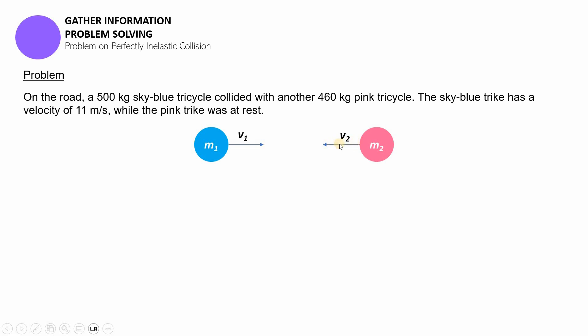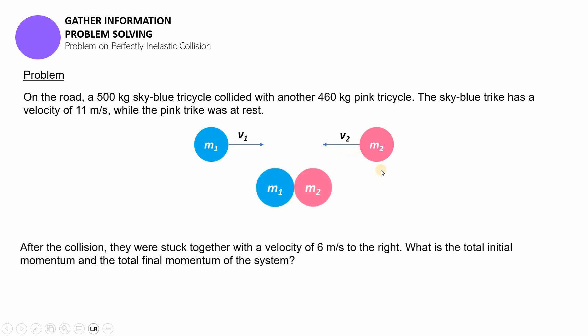Now again, look at this illustration. Is this the illustration we're looking for? Very good, you have to remove this arrow over here because m2 or the pink tricycle was actually at rest. So you just have to remove it. They collided, now after the collision they were stuck together with a velocity of six meters per second and they were going towards the right. Now what do you think is the total initial and the final momentum of the system? Solve for it. I'll give you a moment, pause this video.